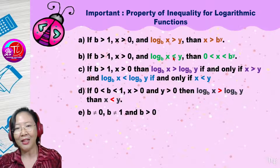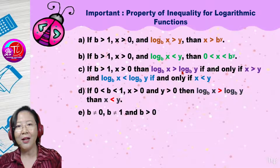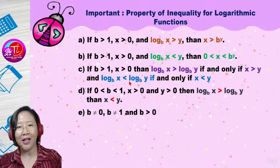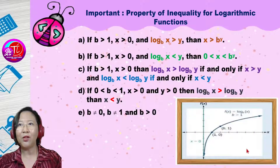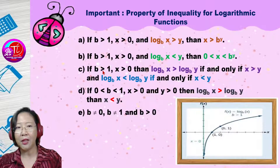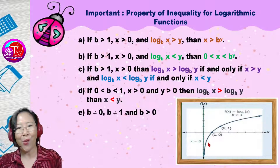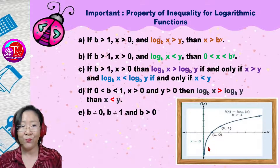If you have less than, then the inequality gives you 0 to b to the power of y. If you have logs on both sides, the inequality symbol also follows — so if log x is bigger than log y, then x is bigger than y. Same goes for the less than case: log x less than log y means x is less than y. If you don't want to memorize this, you can refer to the graph.